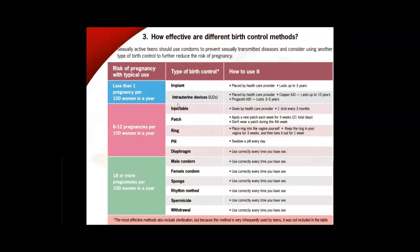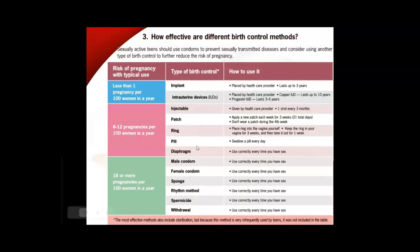This slide shows the effectiveness of different methods. Sexually active teens should use condoms to prevent sexually transmitted diseases and consider using another type of birth control to further reduce the risk of pregnancy — such as a condom plus a pill or spermicide. The most effective methods result in less than one pregnancy per 100 women. The least effective — like withdrawal or the rhythm method — result in 18 or more pregnancies per 100 women. Hormonal methods are generally more effective than barrier methods.